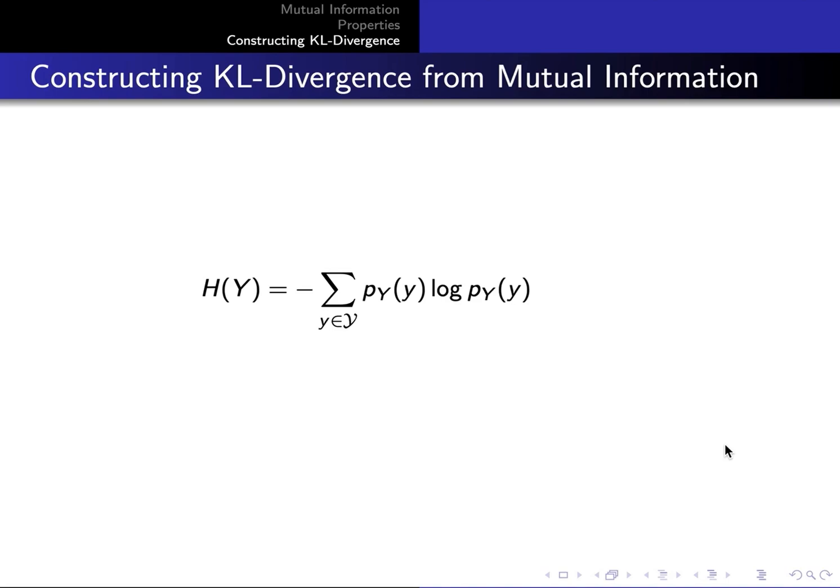Much the same process can be done on H of Y. We extend the sum to a joint probability distribution by writing the marginal with respect to y as the joint.